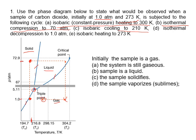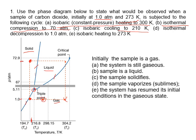Next, isobaric heating to 273 K — constant pressure heating is a horizontal line going to 273 K, which goes back to the initial point. The system has resumed its initial condition in the gas phase state.